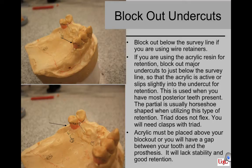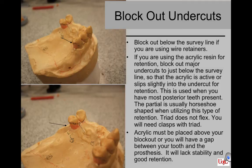If you have posterior teeth with undercuts on the lingual on each side of the arch, you may construct an interim RPD using acrylic resin for retention without any visible clasp. This requires a horseshoe-shaped major connector on the maxillary. You must block out major undercuts to just below the survey line so that the acrylic flexes into the undercut for retention. When using Triad material, block out up to the survey line, and Triad must be placed above your block out or you will have a gap causing lack of stability and retention.